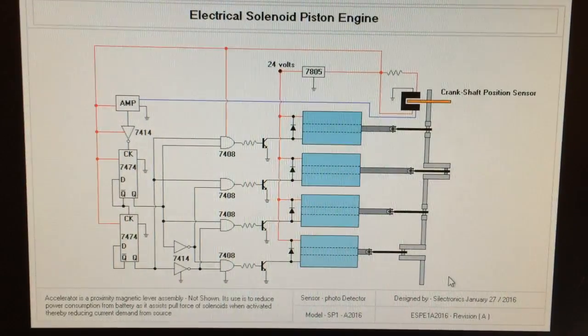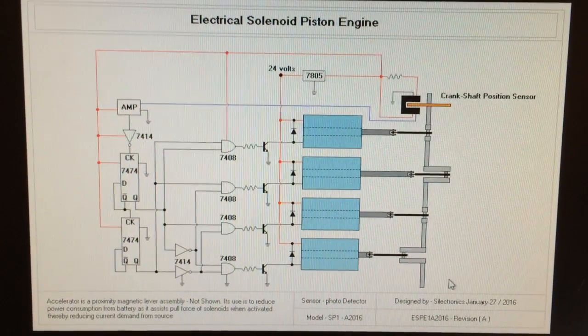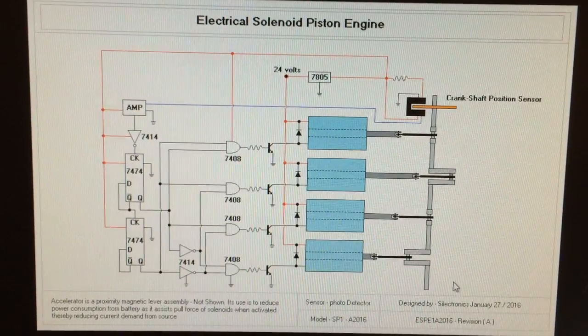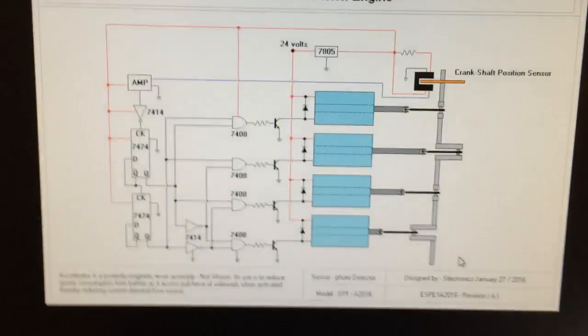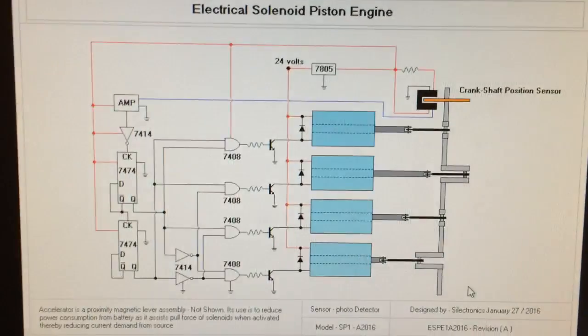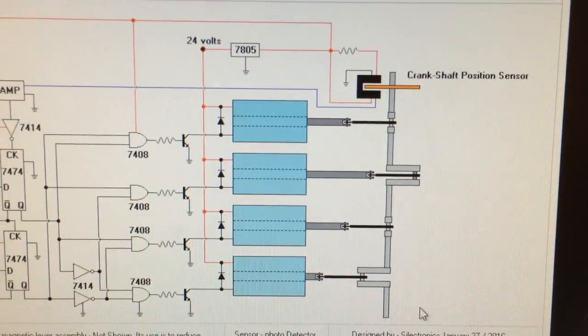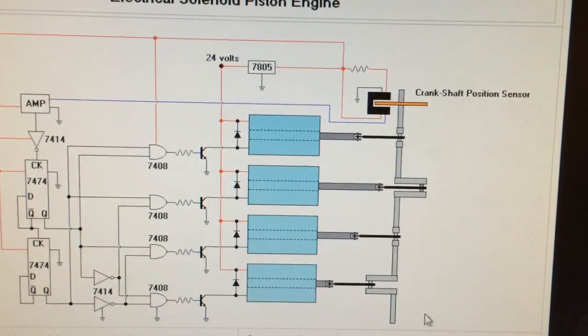So what I've done is I've designed a circuit here that is electronically activated. This one here, as you can see, uses a crankshaft position sensor by photo detection.